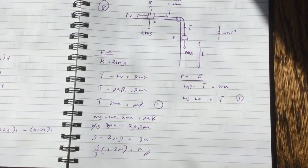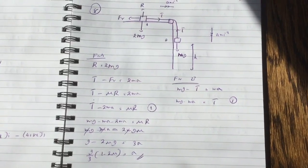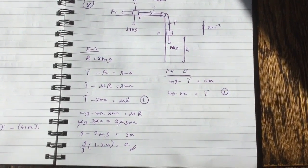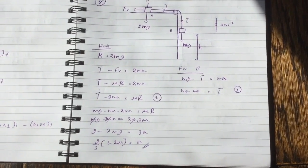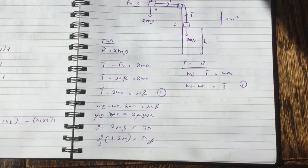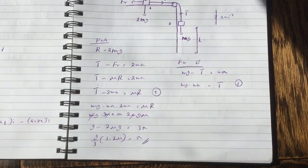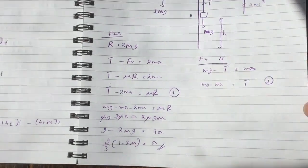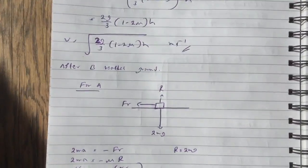Now for B, mg minus T equals ma. So mg minus ma equals T. So what I did is I substituted that T into the second equation. And we get acceleration equal to g over 3, 1 minus 2mu equals acceleration. So read carefully. I know this one is a bit of a complicated question.